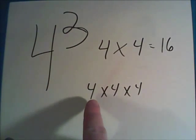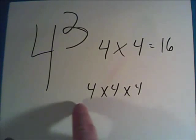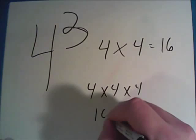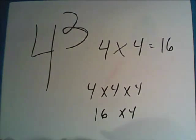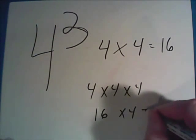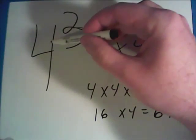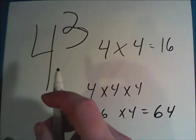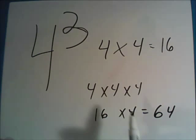All that little number tells us is how many of these fours are lined out. So here we have three. Four times four is sixteen. Now sixteen times four is going to be sixty-four. So four to the third power is sixty-four. Just remember that the exponent tells us how many of the base numbers are going to be multiplied times each other.